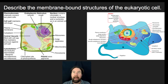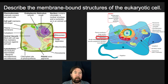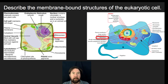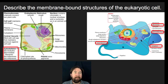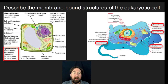When we look at a eukaryotic cell, we will find a handful of structures within the cell, including ribosomes, where proteins are made, and also some components of the cytoskeleton — the microtubules, the microfilaments, the intermediate filaments, and so forth — that are structures not necessarily membrane-bound.